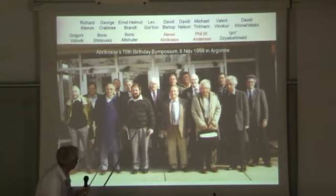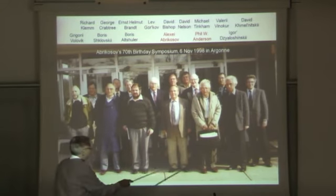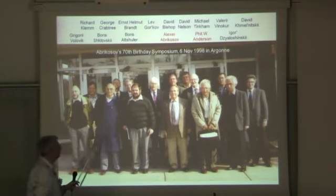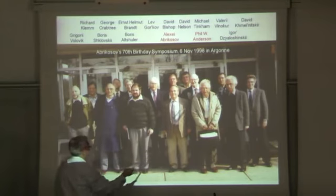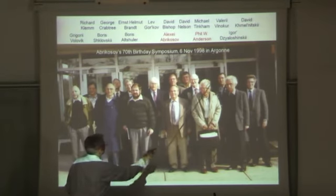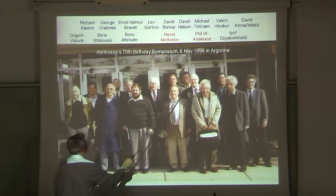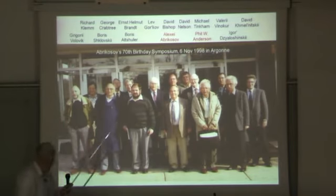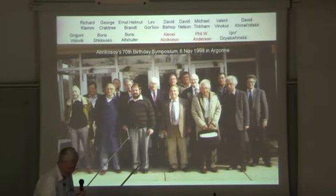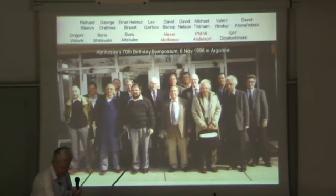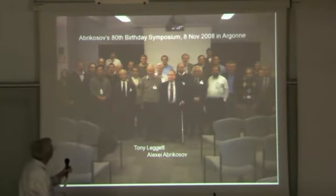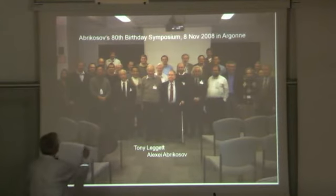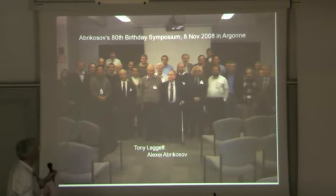Five years before, Abrikosov had his 70th birthday, so I was there. This is Phil Anderson—he already had received the Nobel Prize at that time. Famous colleagues of Abrikosov: Gor'kov and Larkin, this is Altshuler, Vinokur, Mike Tinkham, this is Belovic, Boris Altshuler. They were all there, this was one day, and everybody could talk for half an hour.